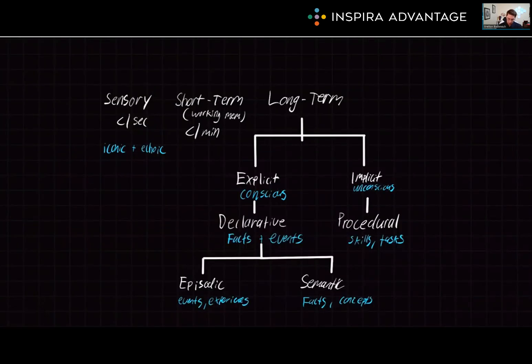So to one last time go over this tree, long-term memory, we have two different branches, explicit and implicit. Explicit is made up of declarative memories, such as episodic and semantic memory. Semantic memory are the facts you're memorizing for the MCAT. Episodic memory is memory of like your childhood. Implicit memory is unconscious, and it has procedural memory within this, including skills and different tasks, like how to quickly click the play button.